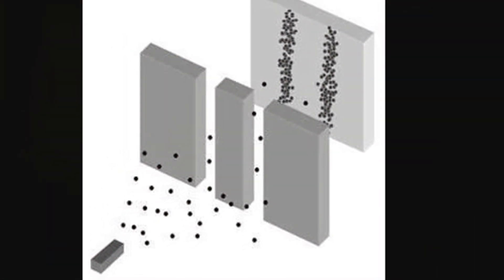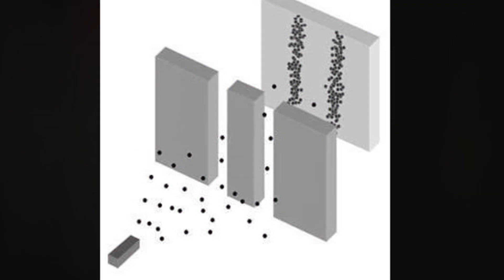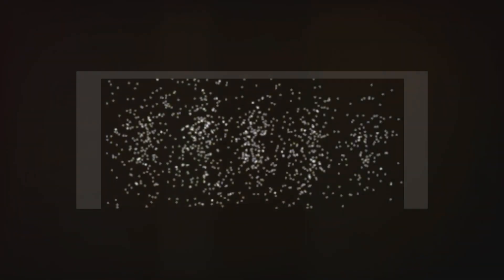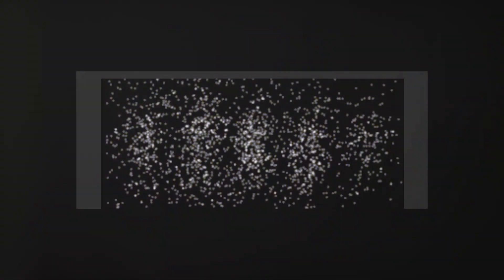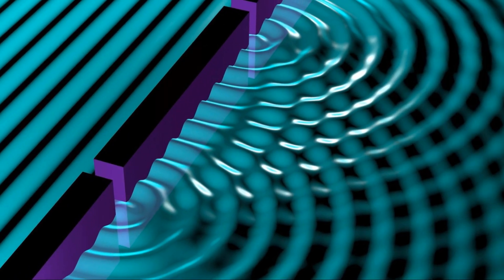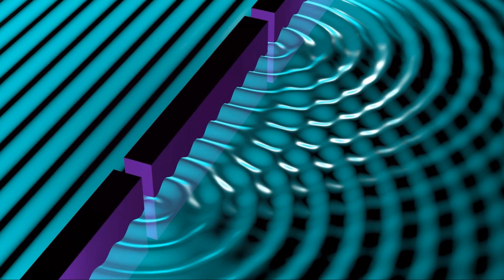one behind each slit — simple, right? But when it comes to electrons, the reality is far from simple. Instead of two distinct clusters, the screen displays multiple stripes with gaps where few electrons land. This pattern doesn't mimic the expected behavior of tennis balls. Instead, it resembles the interference pattern of two waves colliding. This interference pattern consists of alternating bright and dark bands, indicating that the electrons passing through the slits are behaving like waves.